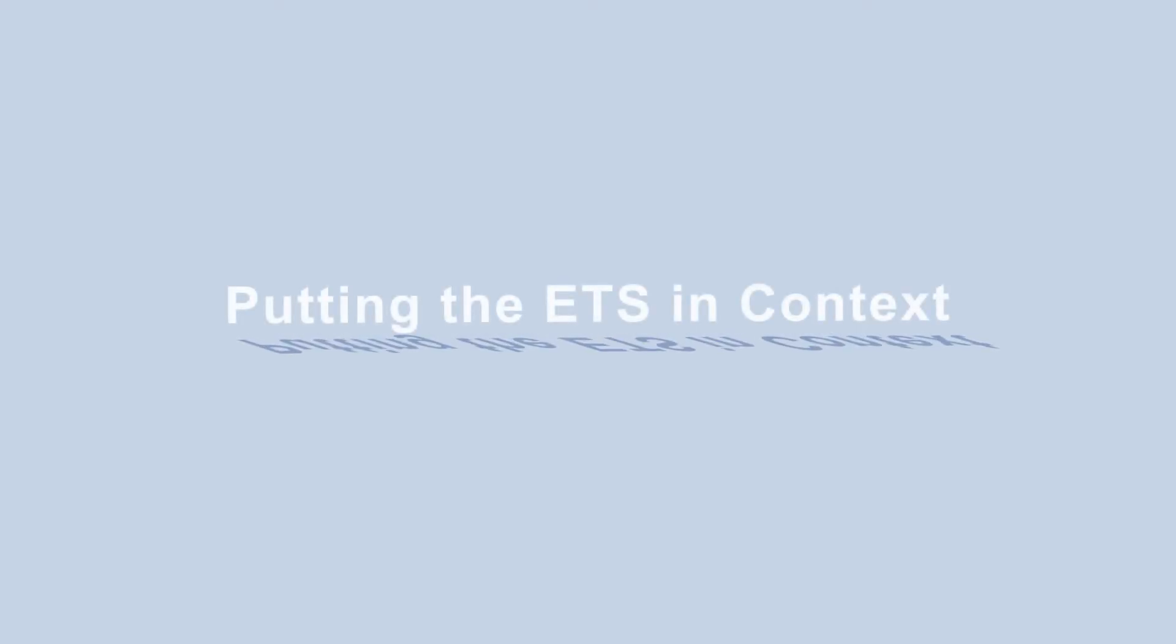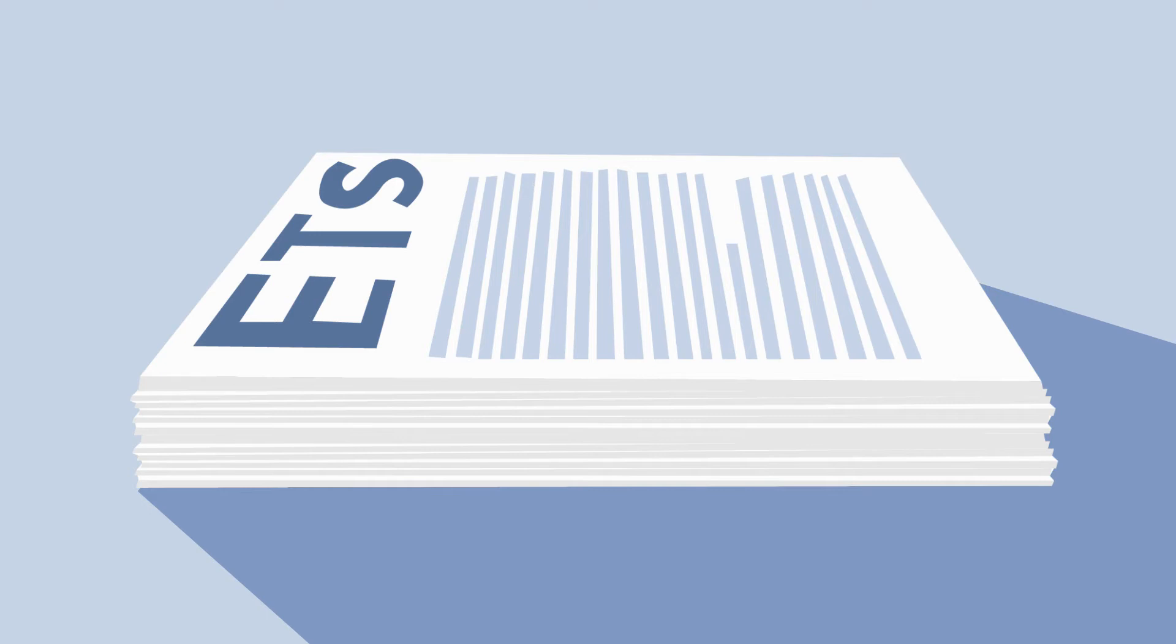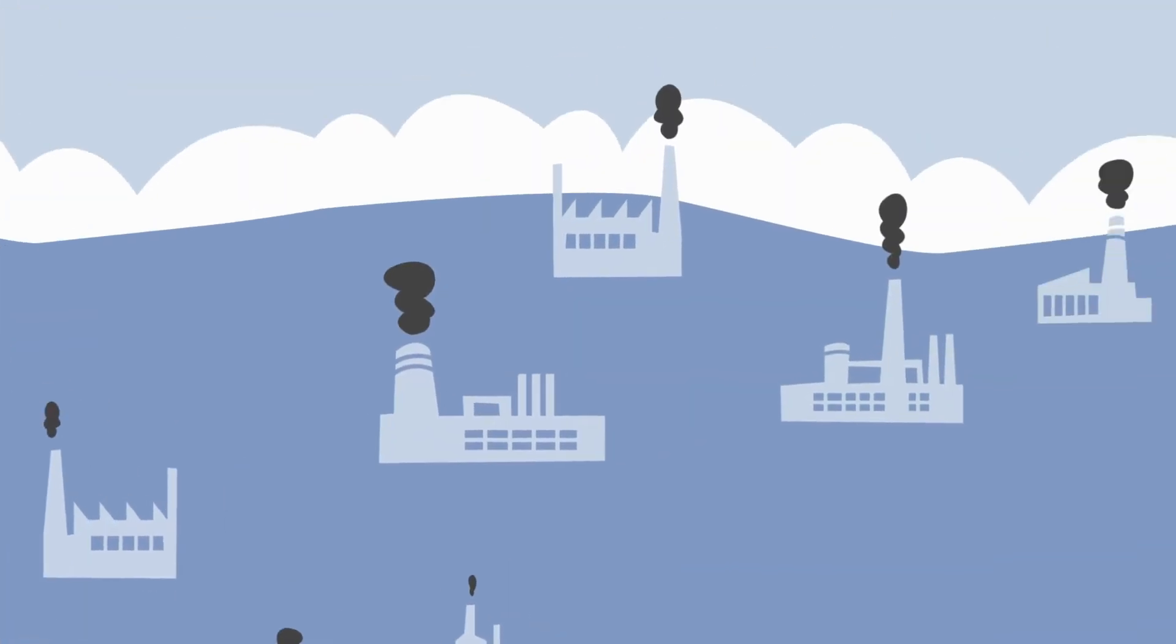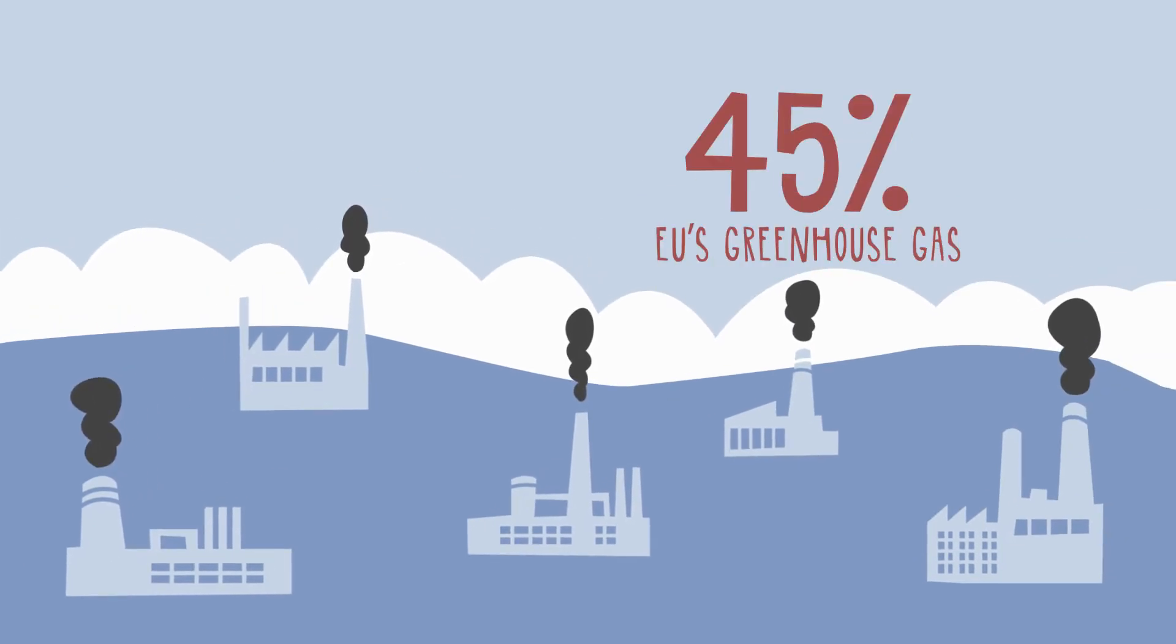The EU Emissions Trading System, or ETS, is the behemoth of EU climate policy. It regulates over 12,000 sources of pollution in 31 countries by capping 45% of the EU's emissions and putting a price on carbon.